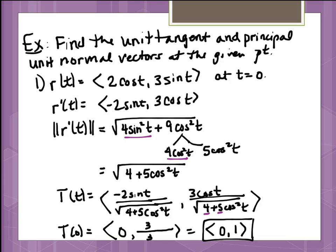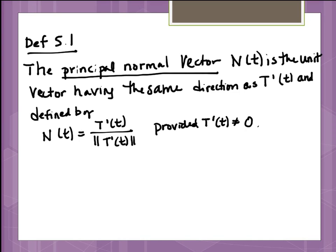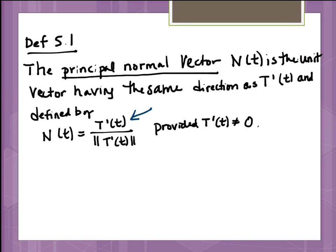Even more work, however, is going to be that principal unit normal vector. Because if you'll take a look back here, what it says I need to do is I need to do the derivative of t prime of t, which means I actually need to take the derivative of this, which is, as you can see, not very friendly. I've got quotient rules. I've got a chain rule in there. It's just downright messy. So we are going to take the derivative of that, however.